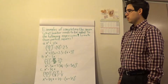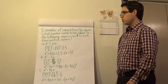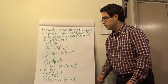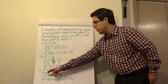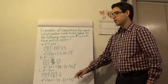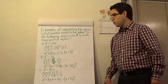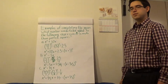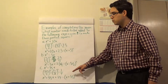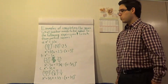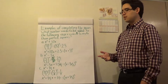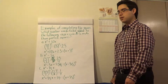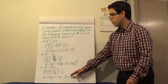Now let's look at c: x squared plus 2 thirds x. The coefficient for x here is 2 thirds. When we divide 2 thirds by 2, we will get 1 third. When we square this, we will get 1 ninth. And when we add this number to our expression, we will get x squared plus 2 thirds x plus 1 ninth, which is also going to be a perfect square.